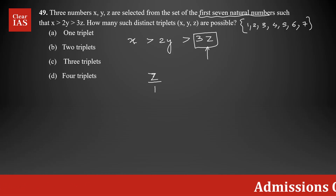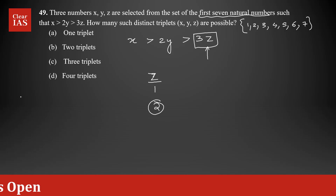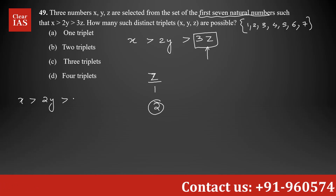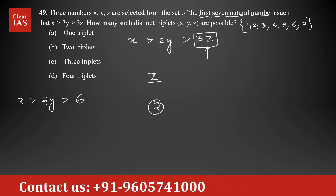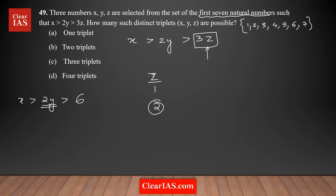Z can be 1 — yes, that satisfies the condition. Can z be 2? If z is 2, then 3z is 6, so 2y must be greater than 6, meaning y must be at least 4. With y = 4, we get 2y = 8, so x must be greater than 8, which means x would need to be 9 — not possible since our set only goes up to 7. So z cannot be 2; the only possible value of z is 1.